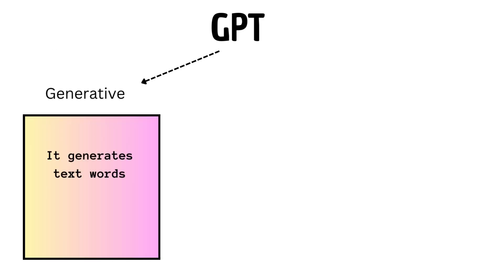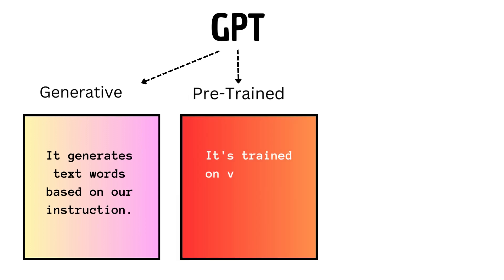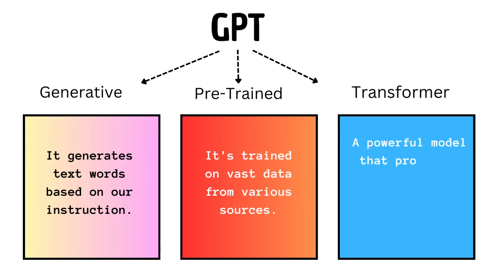GPT stands for: G for generative, it generates text words based on our instruction. P for pre-trained, it's trained on vast data from various sources. T for transformer, a powerful model that processes sequential data, giving it an understanding of language.